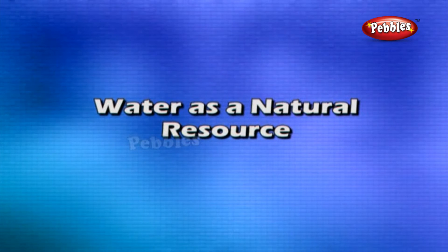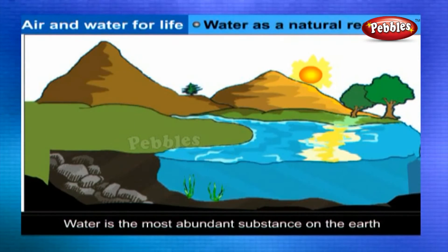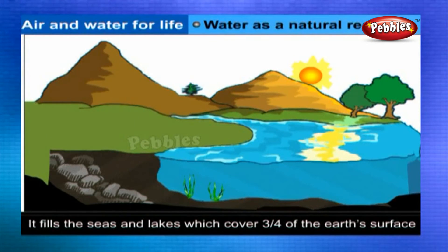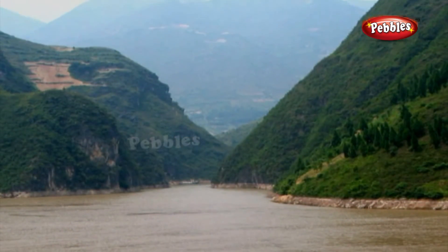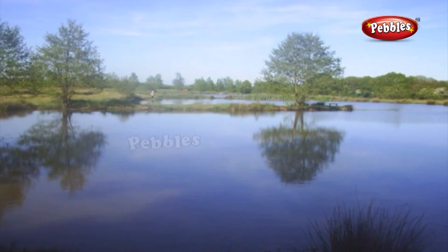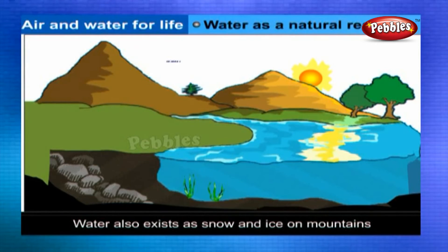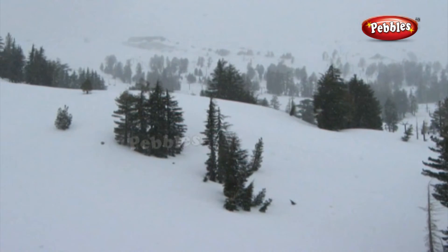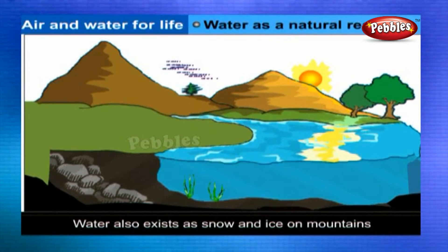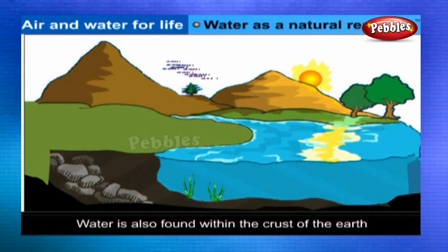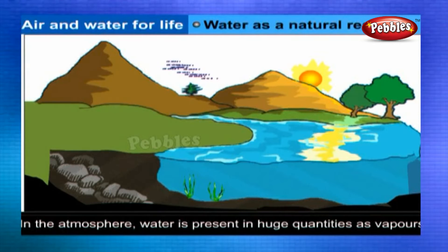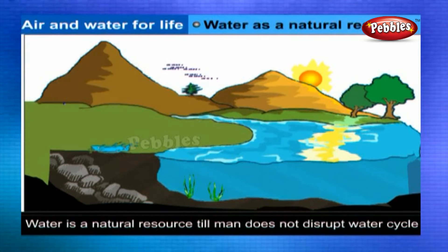Water as a natural resource: Water is the most abundant substance on Earth. It fills the seas, rivers, and lakes, which cover more than three-fourths of the Earth's surface. It also exists as snow and ice on mountains. Water is also found within the crust of the Earth, and in the atmosphere it is present in huge quantities as vapors or clouds. Water is a natural resource so long as man does not disrupt the water cycle.